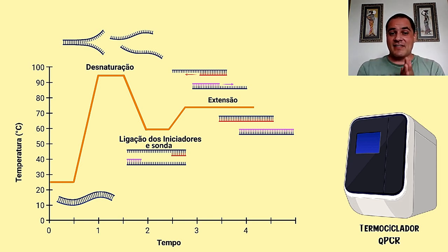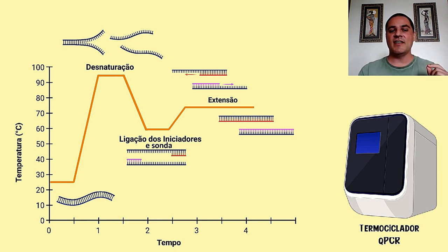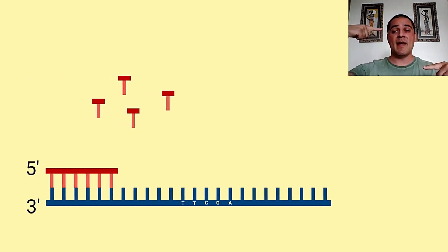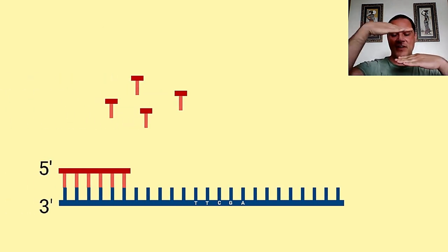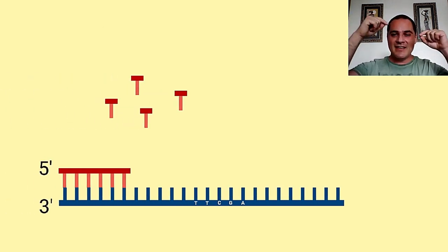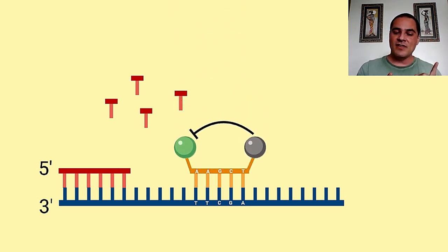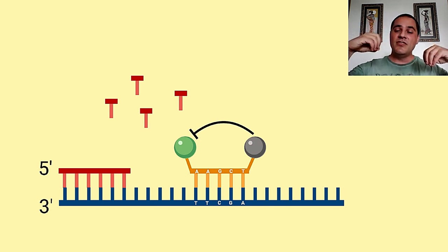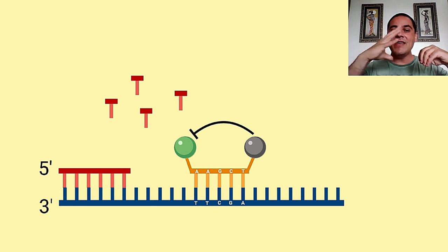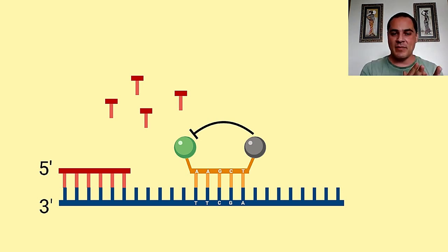Nessa etapa de 60 graus, a gente vai ter a ligação de um primer numa fita e de outro primer na outra fita para a gente ter a amplificação. E nesse momento a gente vai ter a ligação da sonda. Essa sonda, como vocês podem ver ali no lado esquerdo, tem a presença do fluoróforo em verde e, do lado direito, a presença do quencher — essa molécula que inibe a emissão de fluorescência pela sonda.